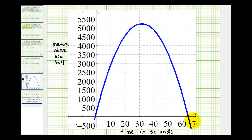So our x-axis represents time in seconds, and our y-axis represents the meters above sea level. Notice that at time t equals zero, the rocket would be right here, which would be the y-intercept. This represents the initial height of the rocket.